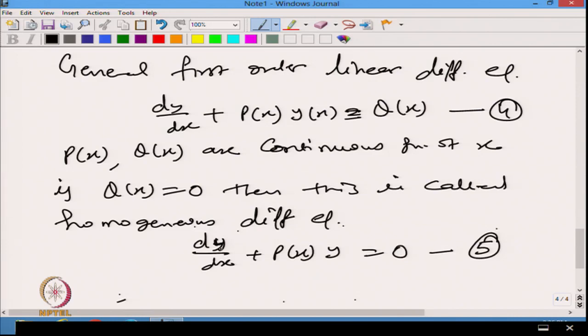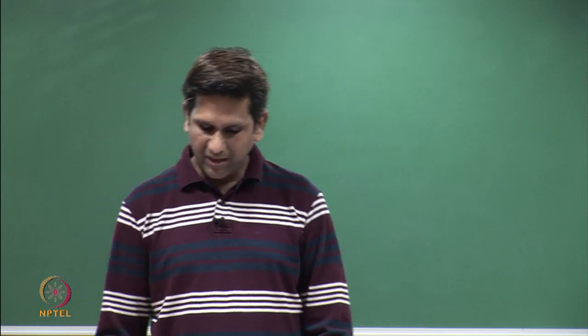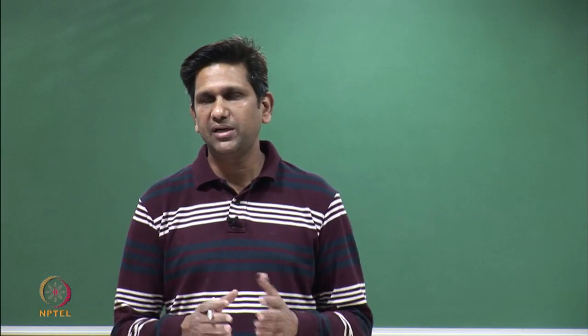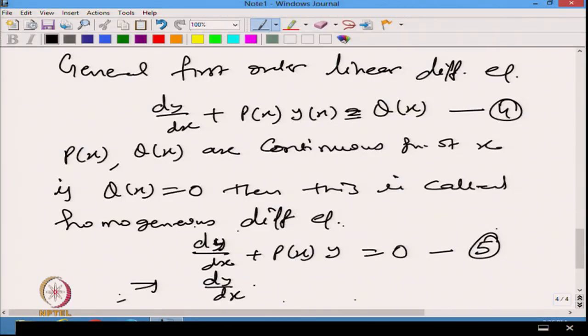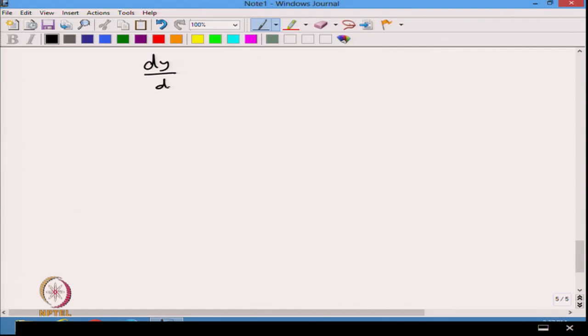From previous knowledge I could solve dy/dx = f(x), but now I have dy/dx = -p(x)y(x). On the right hand side I have a product of two functions, with the dependent variable also appearing. Let us see how to solve this type of equation. I have dy/dx = -p(x)y(x).